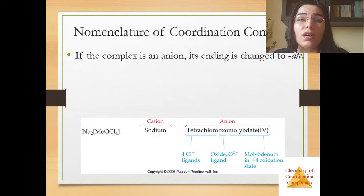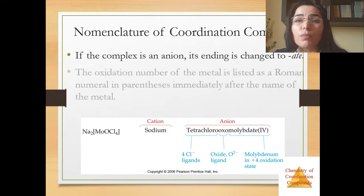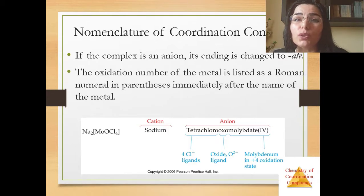When the complex is an anion, its ending is changed to -ate. The oxidation number of the metal is listed as a Roman numeral in parentheses immediately after the name of the metal. In this example, tetrachlorooxomolybdate, here cation name sodium and anion name tetrachlorooxomolybdate. Here are four chlorine ligands and oxide also ligand and oxidation number for molybdenum is equal to plus four.